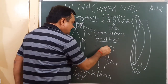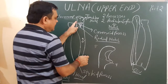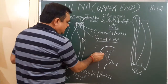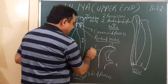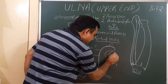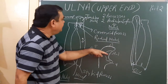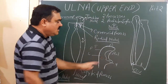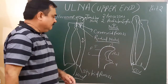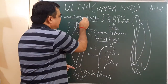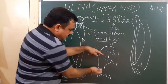The five surfaces of the olecranon process are: the superior surface, the posterior surface, the lateral surface, the anterior surface — which is articular and forms the trochlear notch — and the medial surface. So the anterior surface of the olecranon process forms the trochlear notch.